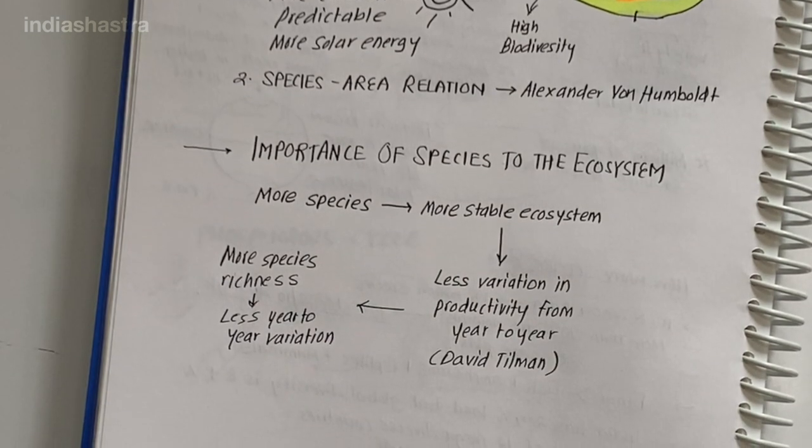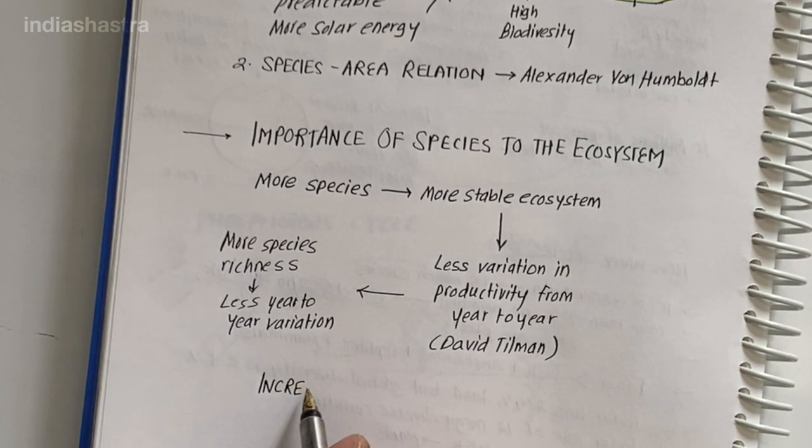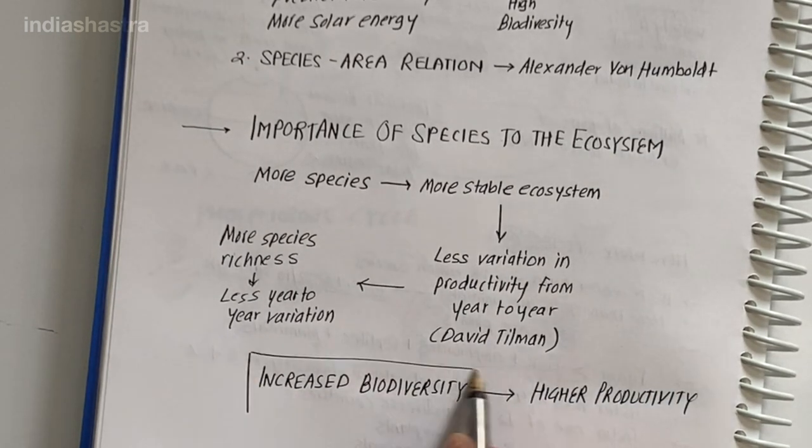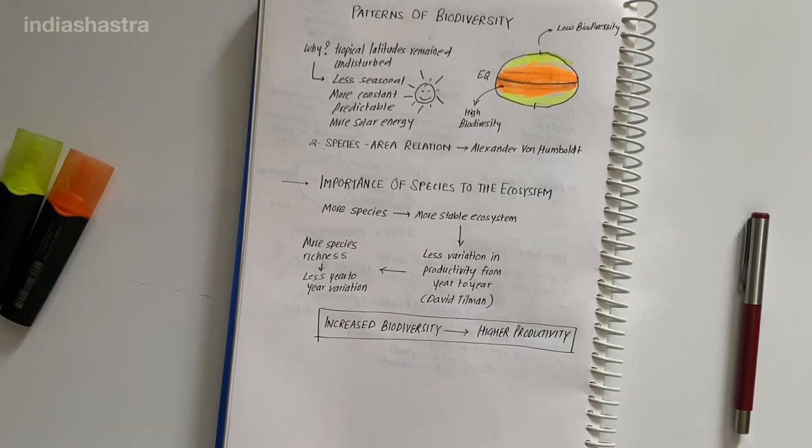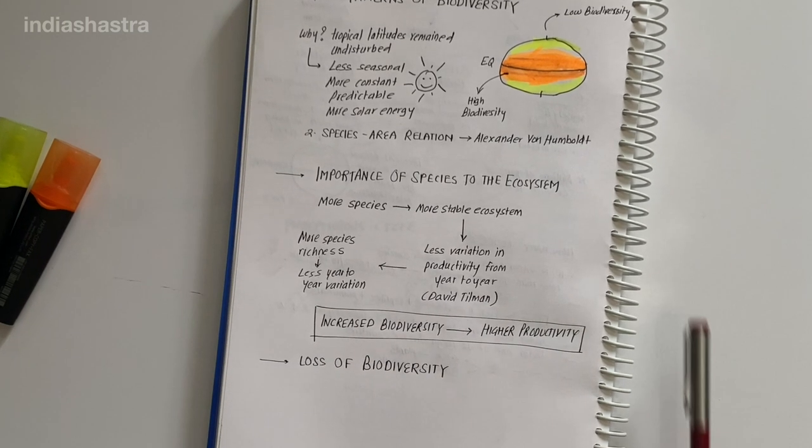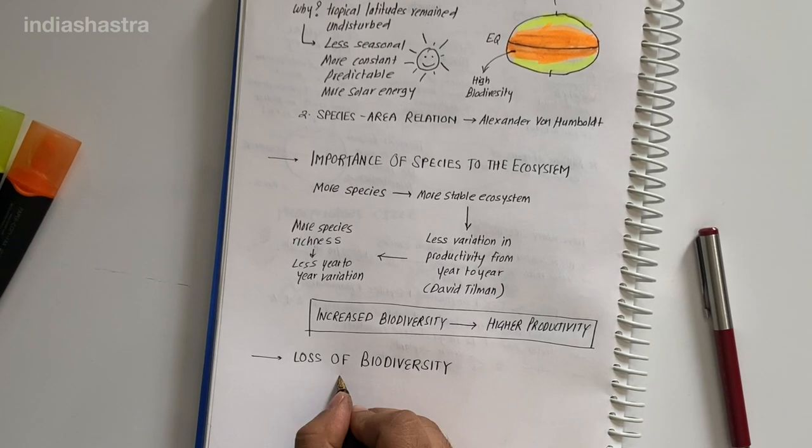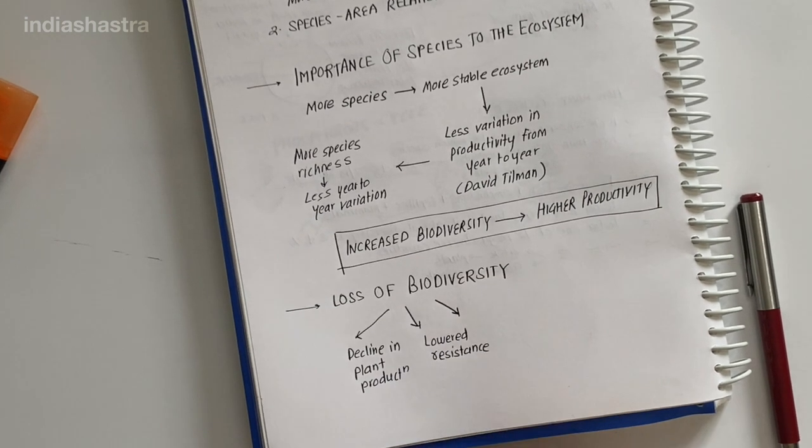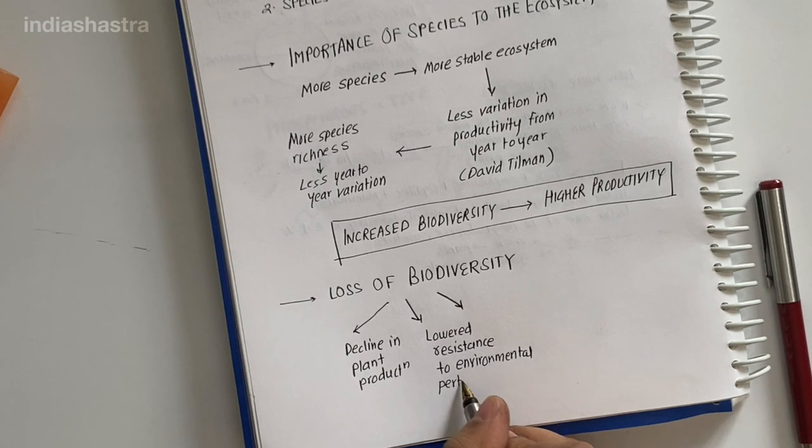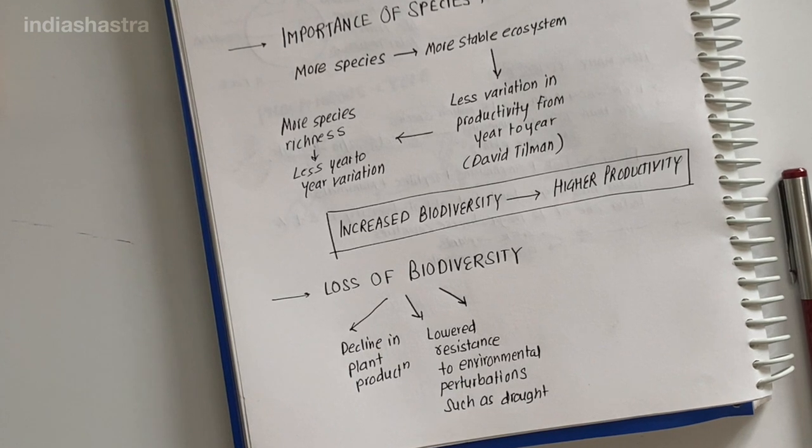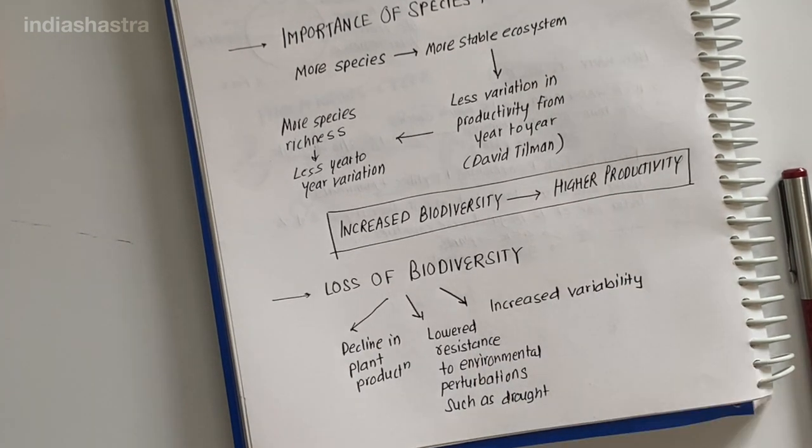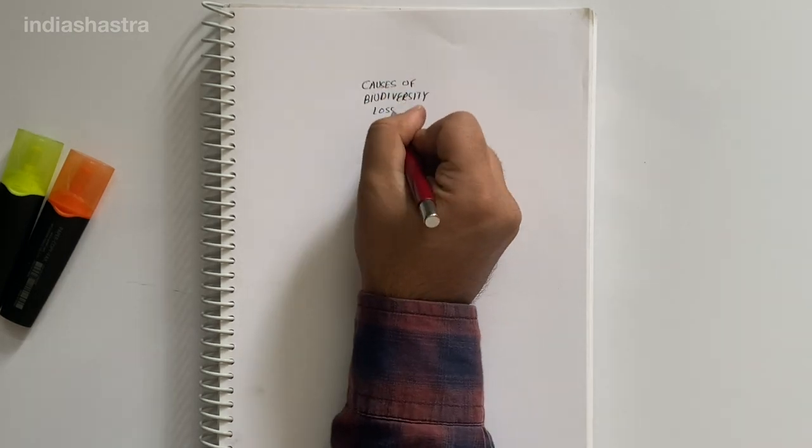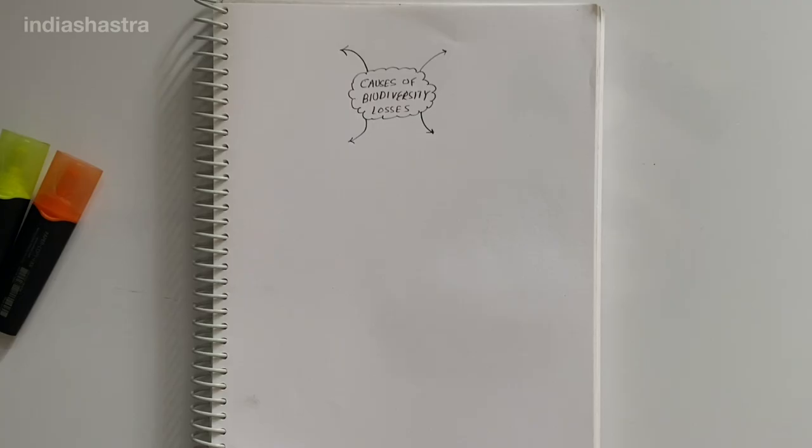Loss of biodiversity: Our planet's biological wealth is declining rapidly, and the accusing finger points to human activities. The last 20 years witnessed disappearance of 27 species. Loss of biodiversity may lead to decline in plant production, lowered resistance to environmental perturbations like drought, and increased variability in certain ecosystem processes like plant productivity, water use and pest and disease cycles. Causes of biodiversity losses: First, habitat loss and fragmentation occurs when natural habitats are converted to human uses like crop plants, urban areas and infrastructure. For example, once tropical rainforest covered 14% of Earth's land, but now only 6%.